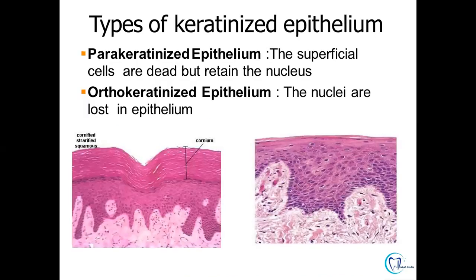When we talk about the types of keratinized epithelium, we have parakeratinized and orthokeratinized epithelium. For parakeratinized epithelium, remember: P for parakeratinized, P for pyknotic. The superficial layer becomes dead but retains the nucleus in a shrunken or pyknotic form. Orthokeratinized epithelium is categorized by the absence of nuclei — there is no nucleus in the superficial layer, whereas in parakeratinized there will be a flat pyknotic nucleus.